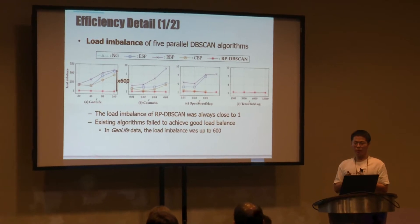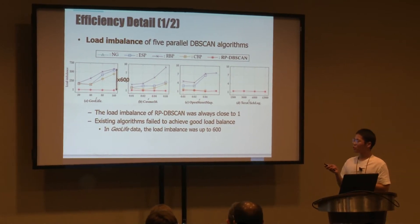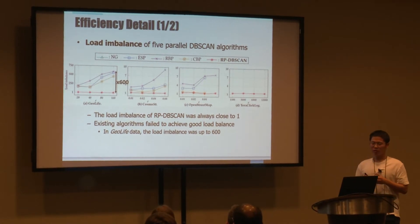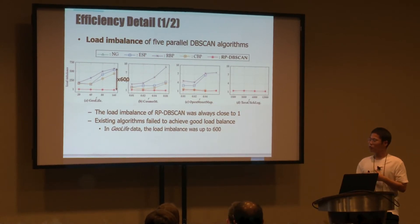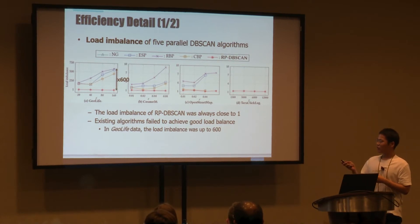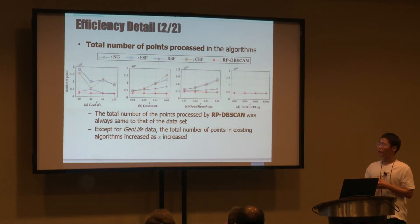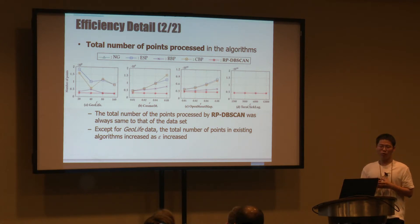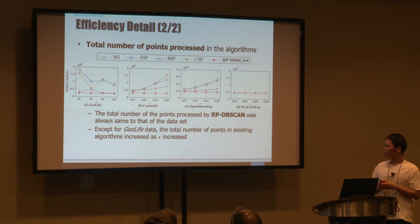Let's discuss where the performance gains come from. The first reason is load balance: the load imbalance ratio of our algorithm was always close to 1, meaning perfect load balance between data partitions. Existing algorithms fail to balance the load — in the heavily skewed dataset, their load imbalance was up to 600. The second reason is the total number of points processed: our algorithm always processes the same number of points as the original dataset because random partitioning produces no duplicate points. In contrast, existing algorithms process increasingly more points as epsilon increases.